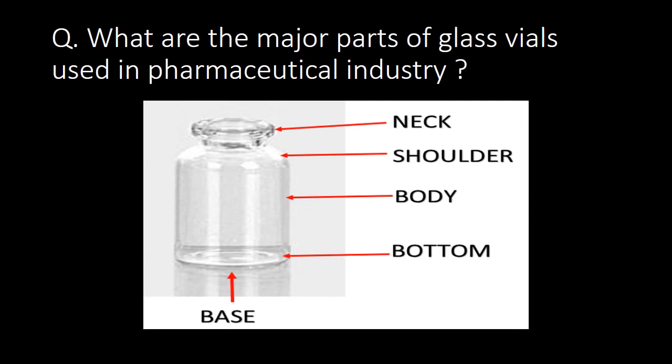Next question: what are the major parts of glass vials used in the pharmaceutical industry? You can see the illustrative diagram to understand the major parts. The major parts are neck, shoulder, body, bottom, and base.